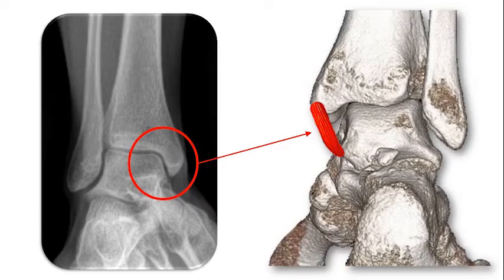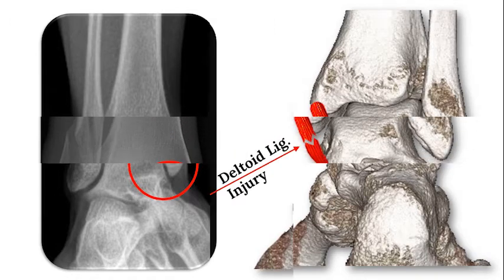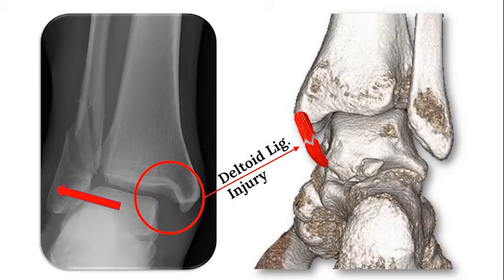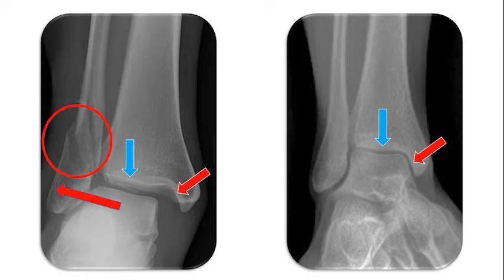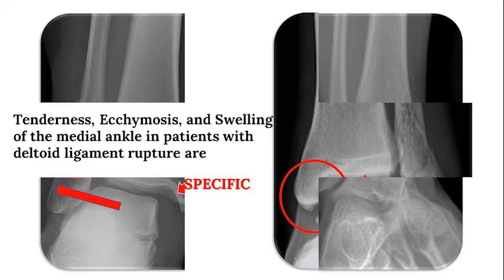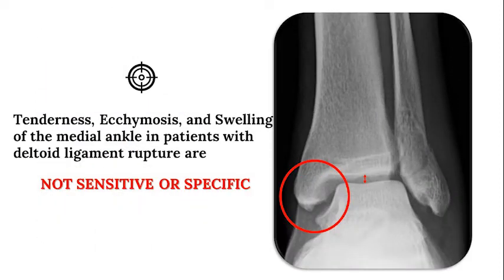In comparison to a normal medial clear space and stable mortise, the radiographs of an ankle demonstrating deep deltoid ligament injury are shown here. The medial clear space is significantly wider than the superior clear space, and in the setting of a fractured fibula, the mortise translates laterally and subluxes in the joint. Studies have demonstrated that tenderness to palpation, ecchymosis, or swelling are poor indicators of deltoid ligament injury.